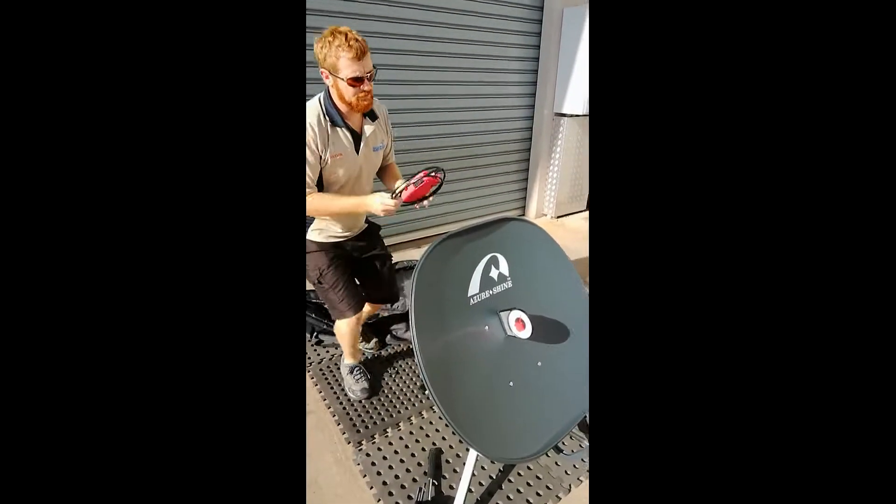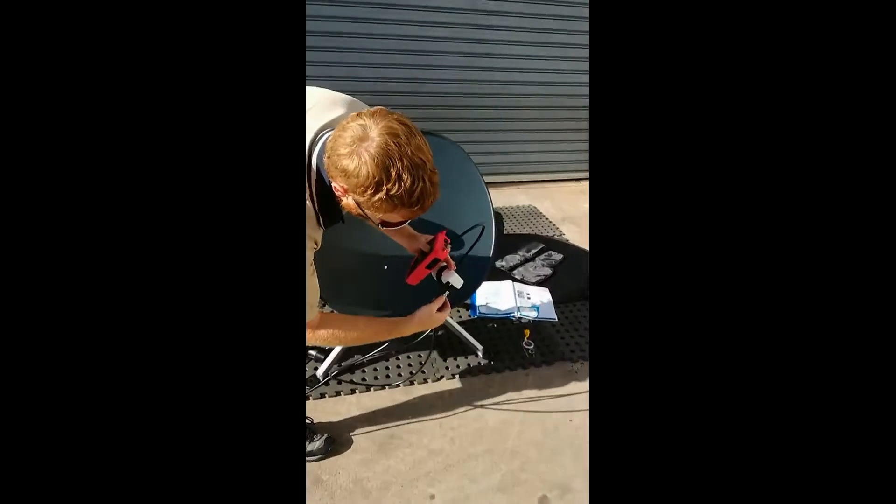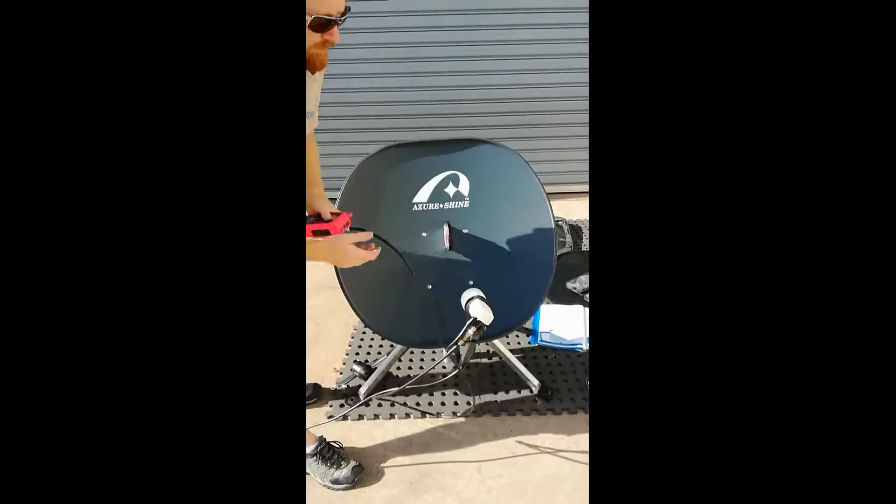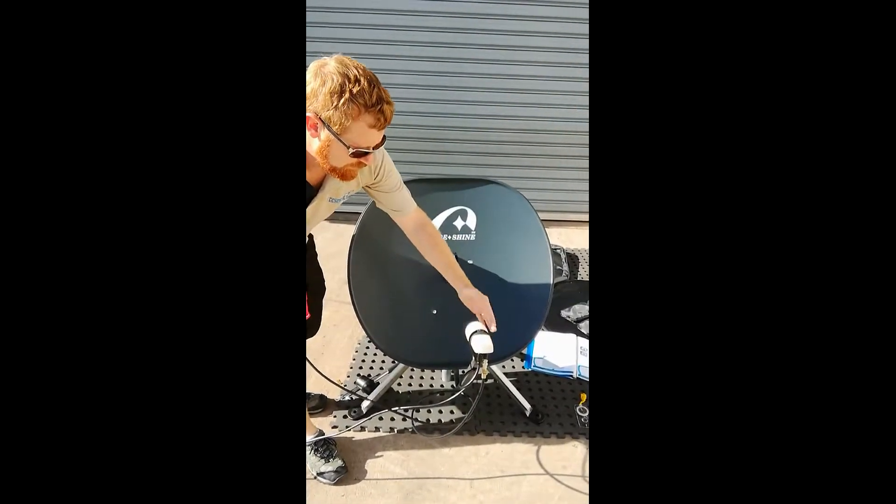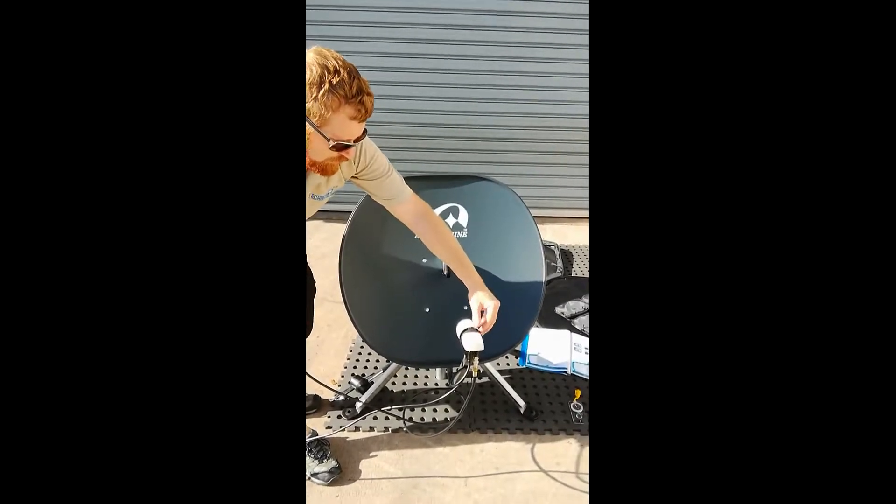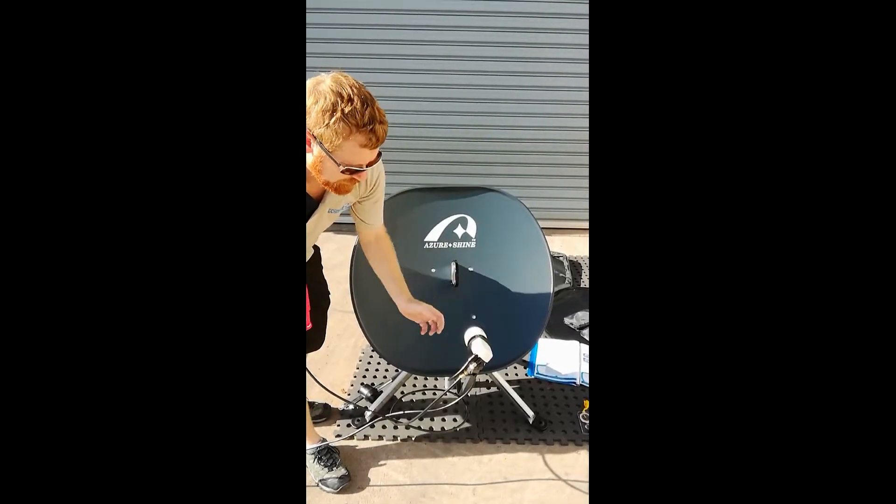We'll now get the satellite finder and plug it into the LNB on the front. As per the diagram we'll adjust our skew on the LNB. So when it's up and down like that it's in the zero position, and we're lining up to the center of the LNB here. Where we're located we need it at 38, which is approximately there.